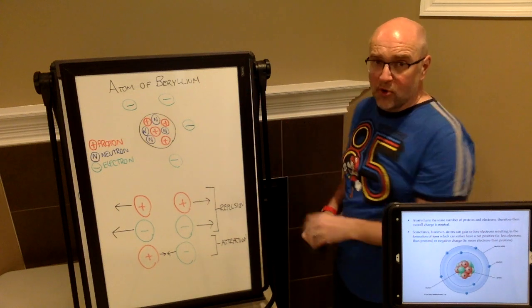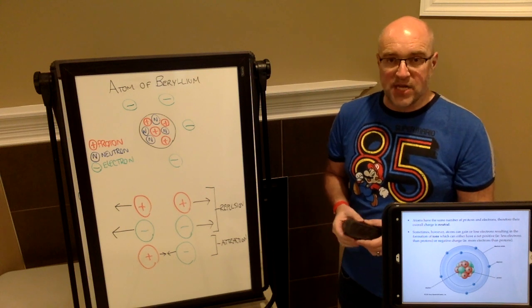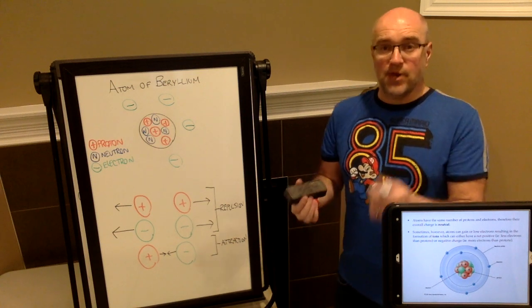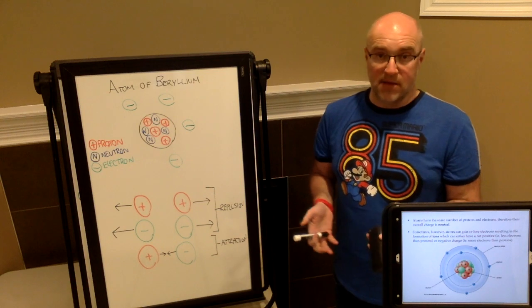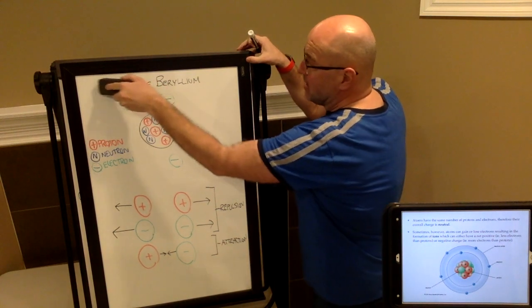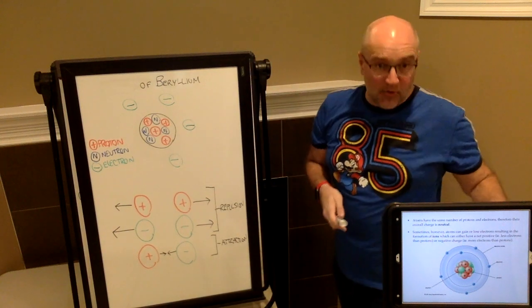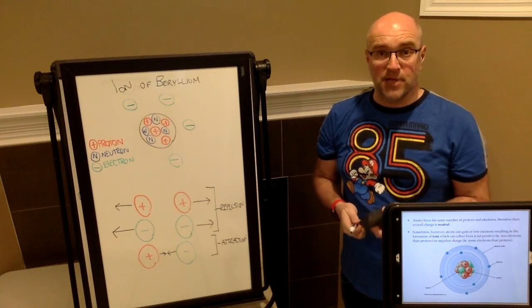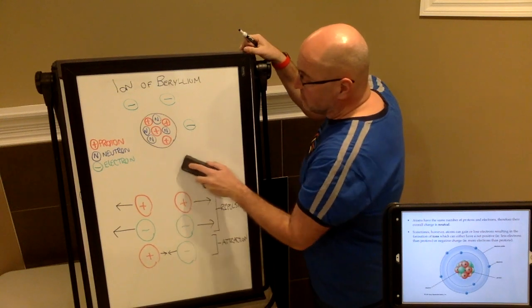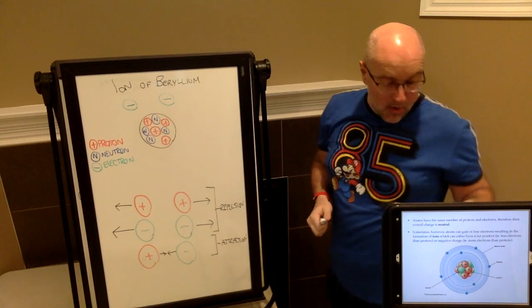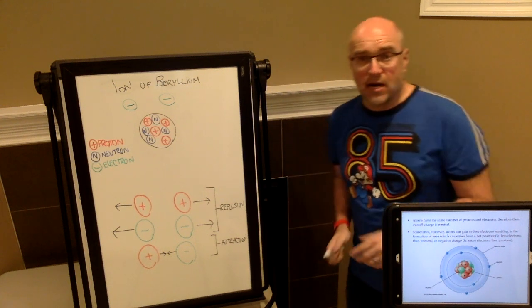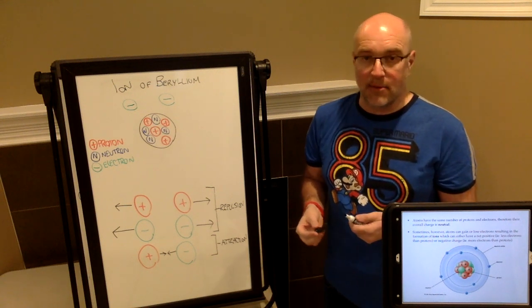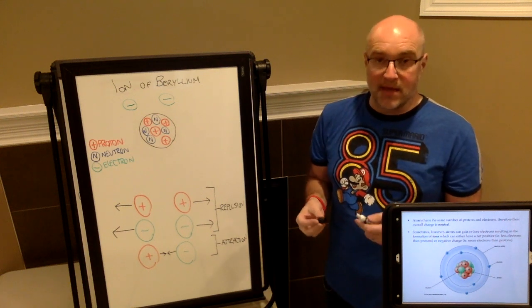However, we did discuss that atoms can lose electrons or gain electrons and become what are called ions. In the case here on the board, we've got an example of beryllium which has an atomic number of 4. If you look on your periodic table, an ion of beryllium has a charge of plus 2. So in order to get a charge of plus 2, we actually have to remove two of the electrons. We've created a positively charged cation of beryllium which has a positive charge of 2.